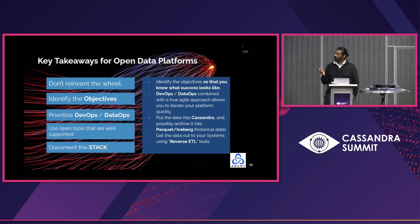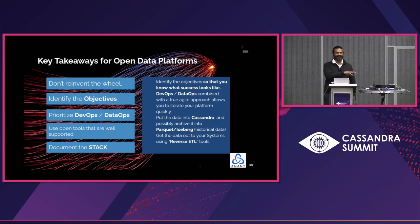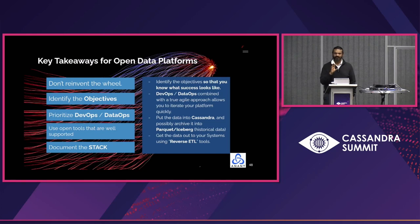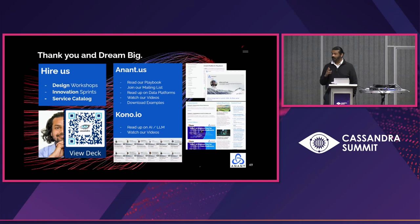Key takeaways: don't reinvent the wheel — just identify the objectives. In the data platform world it's easy to say 'we need to warehouse all the data,' but that's not the goal. The goal is somebody using it for some job they have. Prioritize DevOps and DataOps — automation is the key for a modern data platform. People should not have to stare at their screens while a batch job is running, or babysit log analytics to make sure a real-time ETL app is okay. Use open tools, build an open platform, and document the stack — if you document the stack, you're going to be fine.